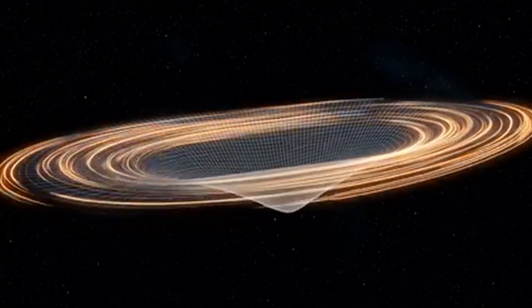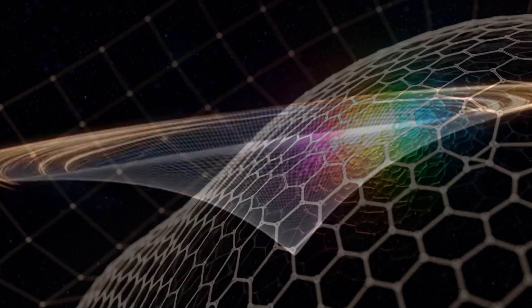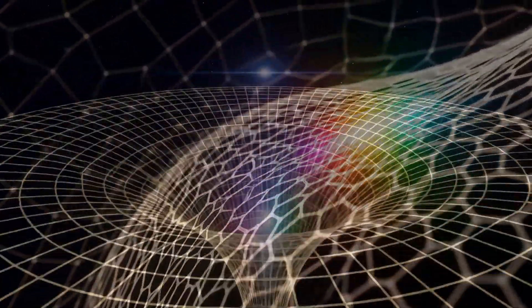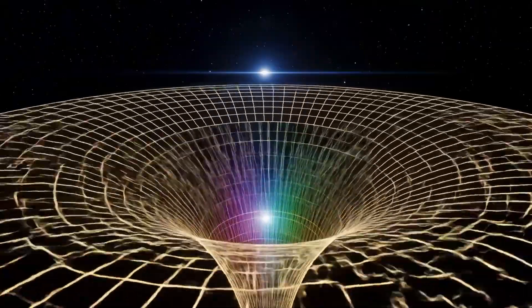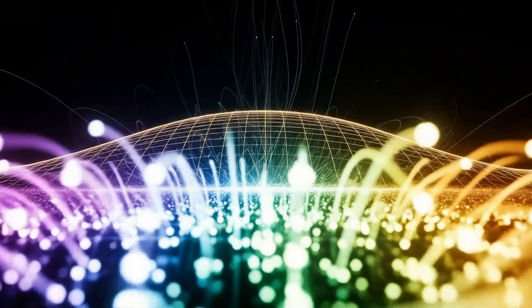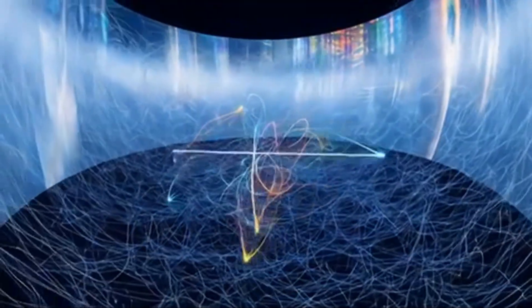The bending is curvature. It is geometry created by overlapping spin. The closer the orientations align, the deeper the curve. This is why mass pulls inward. It is simply clustered rotation, pressing the holographic screen into a well of geometry.